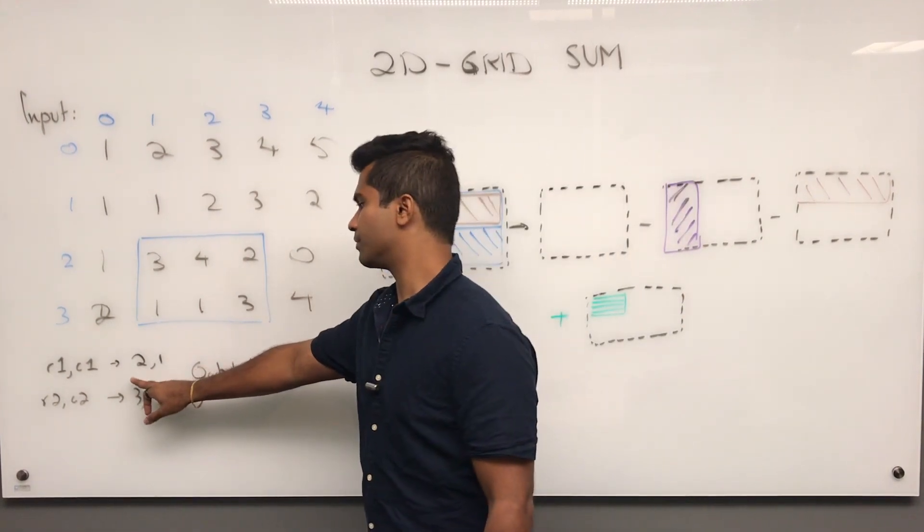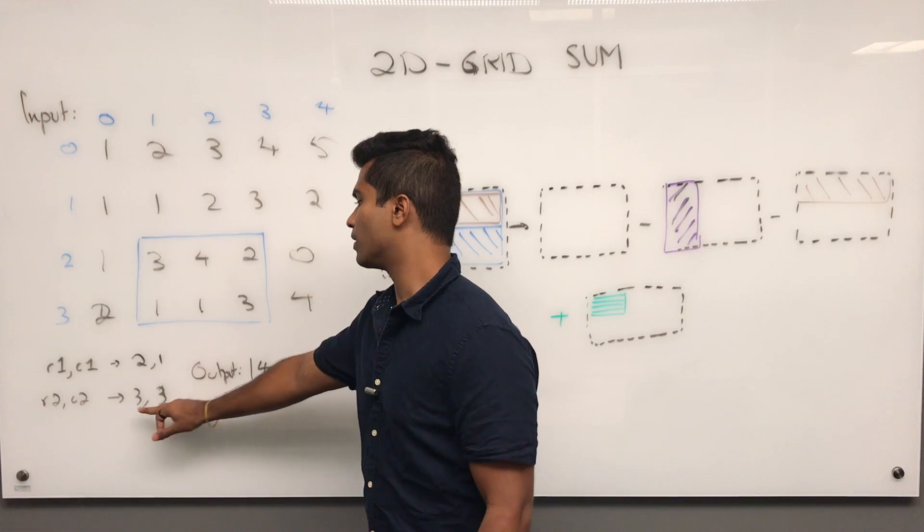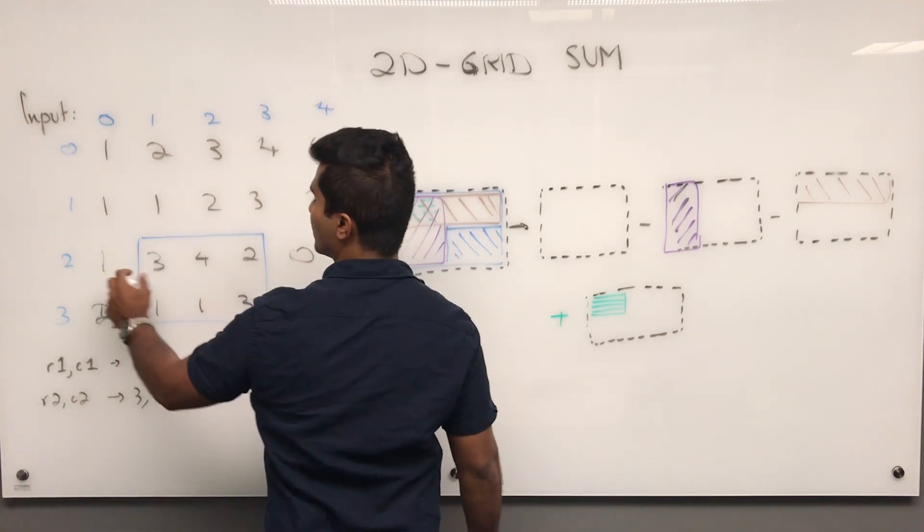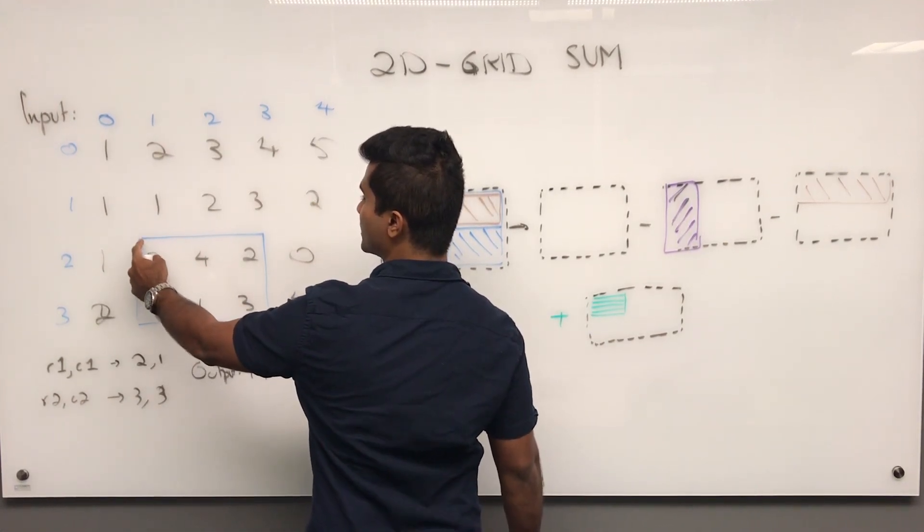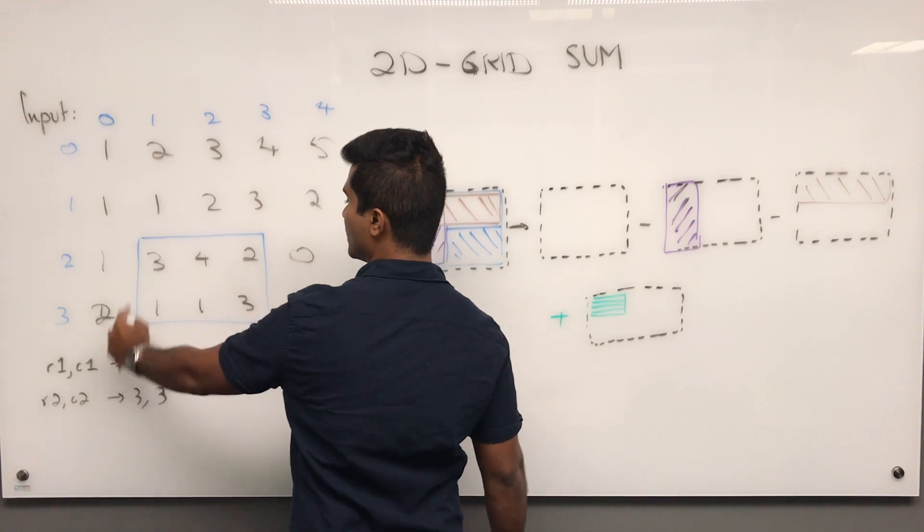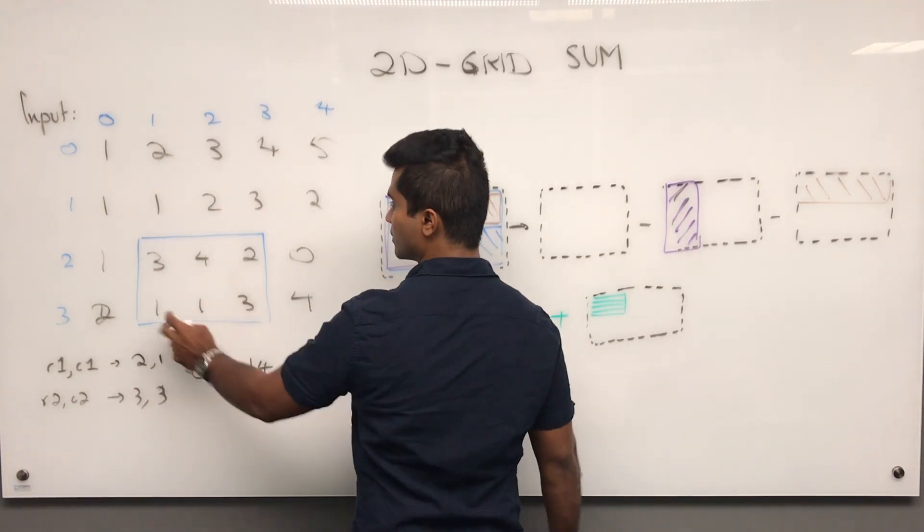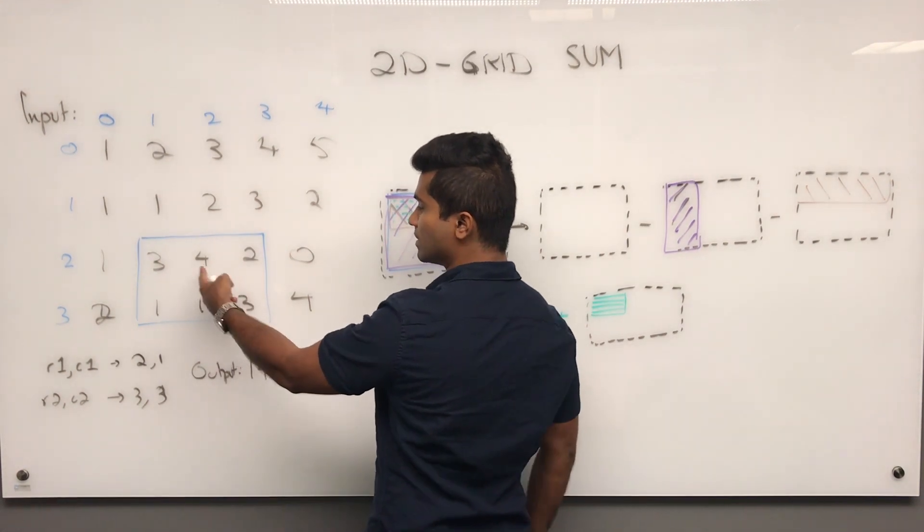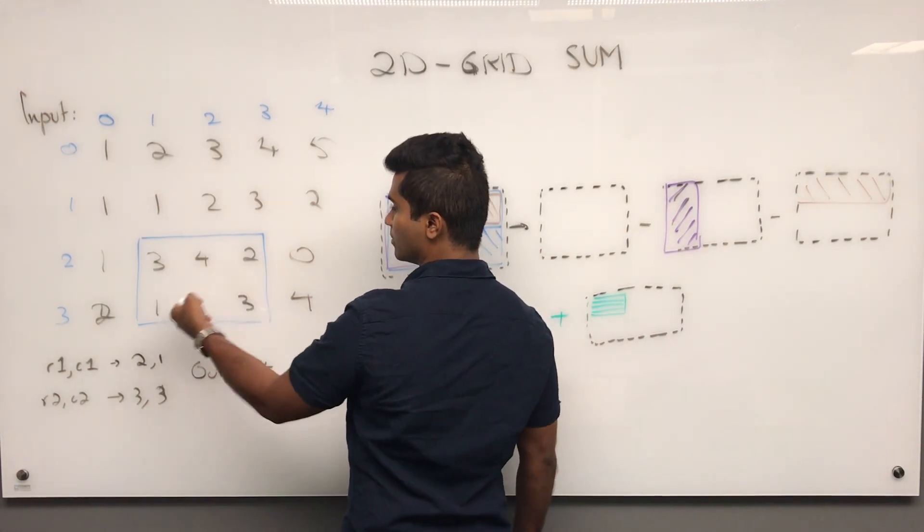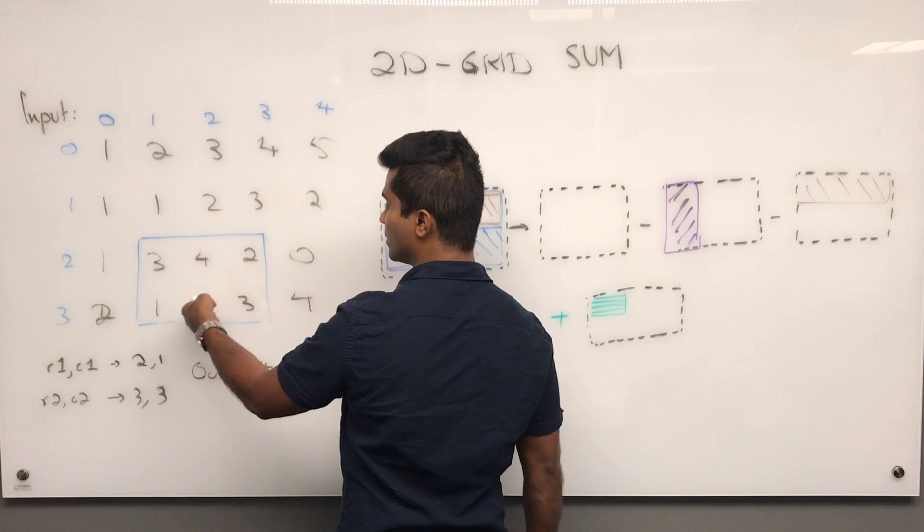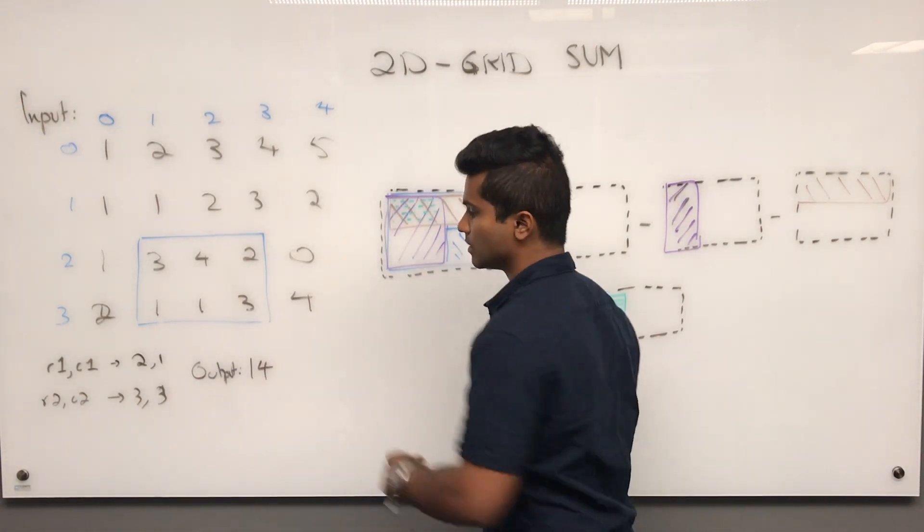For example, if the numbers are 2,1 and 3,3, they want the rectangle from this to this and what they want is the output which is going to be the sum of all this. So 3 plus 4 is 7, 7 plus 2 is 9, 9 plus 1 is 10, 10 plus 1 is 11, 11 plus 3 is 13 and that's the output.